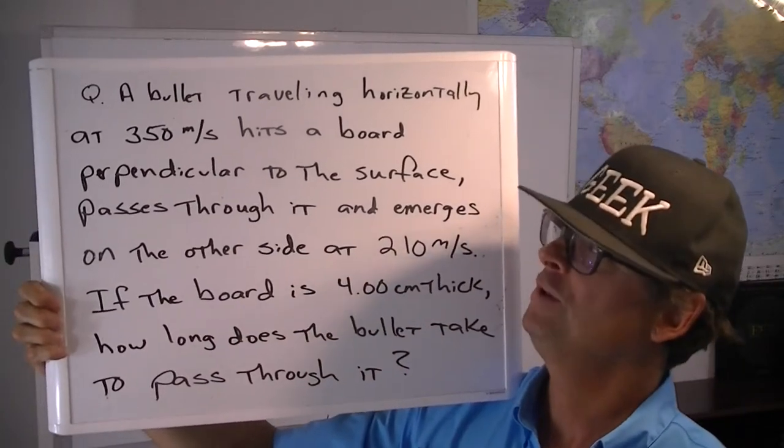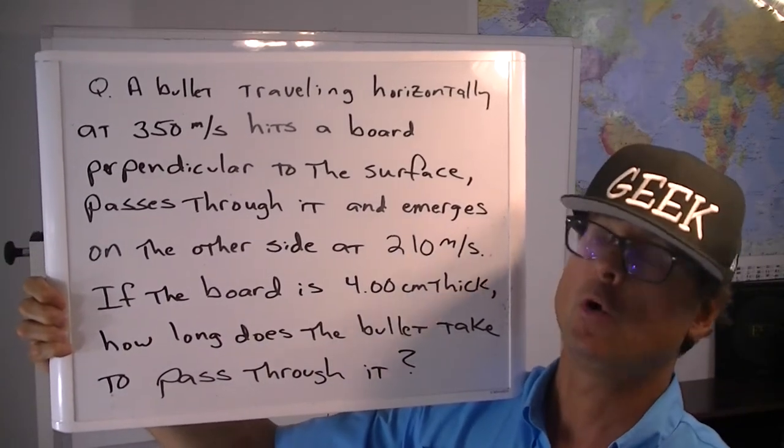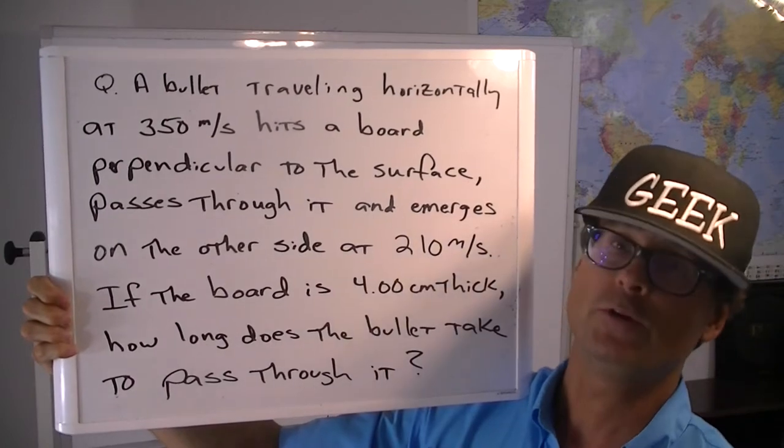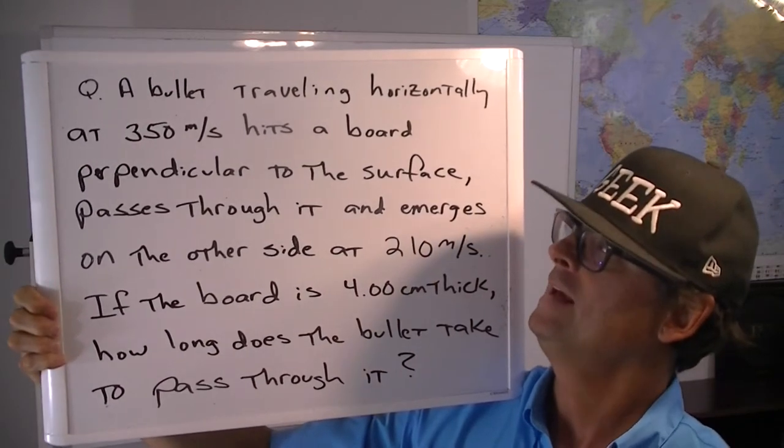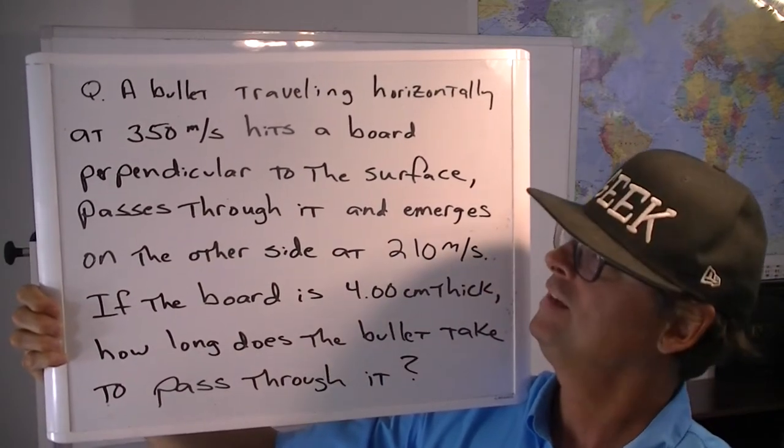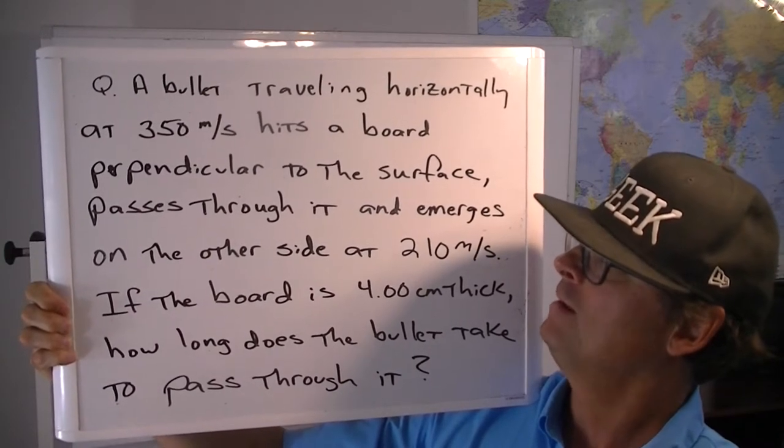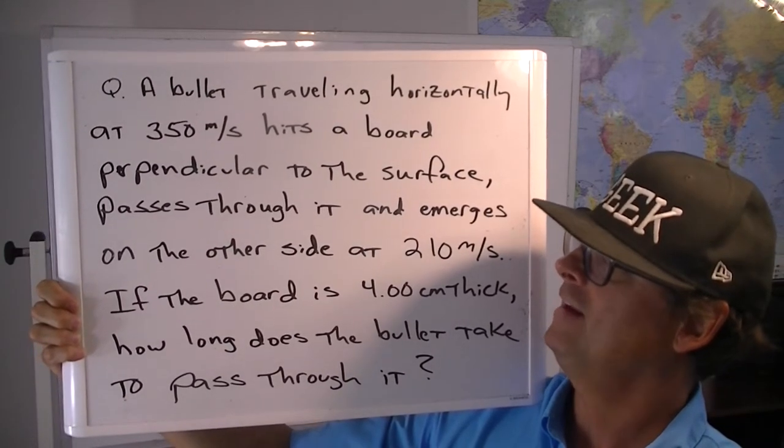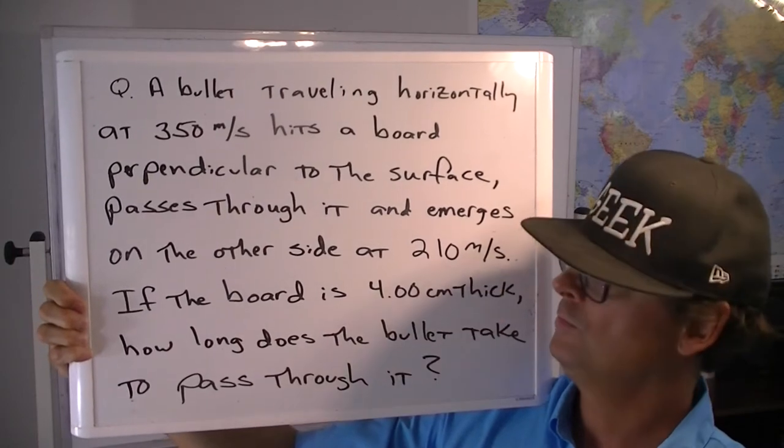Hey Physics Boss Man back with you. A bullet traveling horizontally at 350 meters per second hits a board perpendicular to the surface, passes through it and emerges on the other side at 210 meters per second.